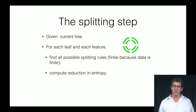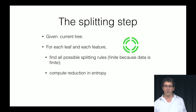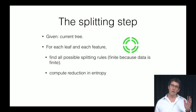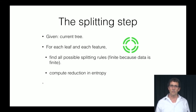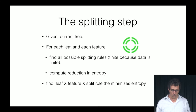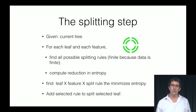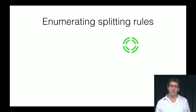This seems very exhaustive — we're enumerating over all possibilities — but because we're just looking at rules that split on a single feature, it is actually not that computationally intensive. What we're looking for is a leaf, a feature, and a split rule that minimizes the entropy. We then add this selected rule to split the selected leaf, producing a new tree, and go to the next step.